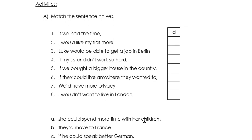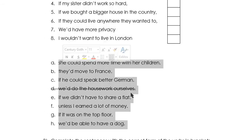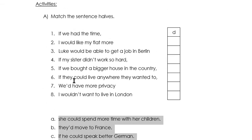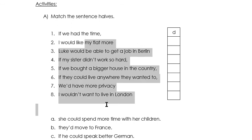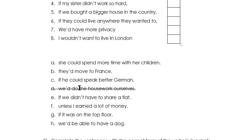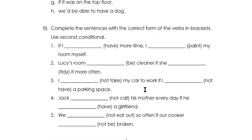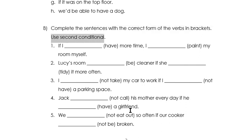Now, here you have two activities. In activity A, you have to match the sentence halves — tienen la mitad de unas oraciones de las condicionales arriba, la otra mitad abajo, y tienen que unirlas. You have an example already done: 'If we had the time' — D — 'we would do the housework ourselves'. In activity B, you have to complete the sentences with the correct form of the verbs in brackets using second conditional. You have five sentences to complete.